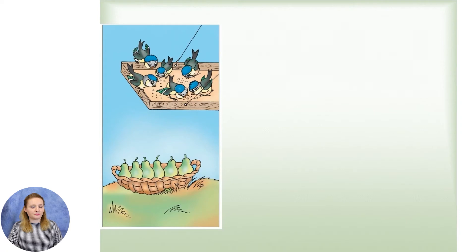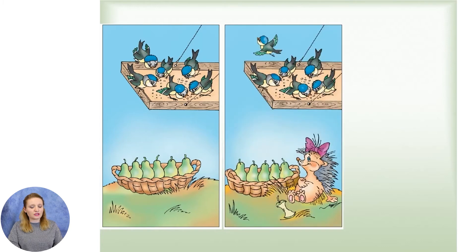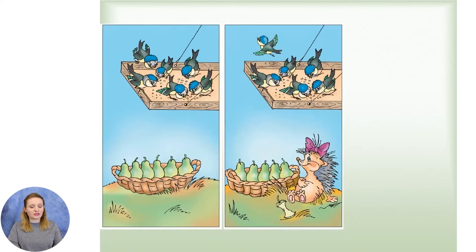Priviți atent imaginile. Câte păsări sunt pe imagine? Exact — 6. Priviți atent și îmi spuneți ce s-a schimbat. Una dintre acestea a zburat. Dragii mei, după cum v-am spus și data trecută, în viața de zi cu zi voi întâlniți diferite situații când numărul obiectelor, ființelor se modifică: crește, adică este mai mare, sau invers, descrește, adică devine mai mic.